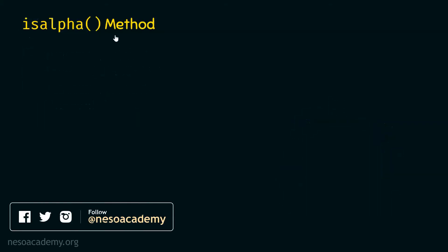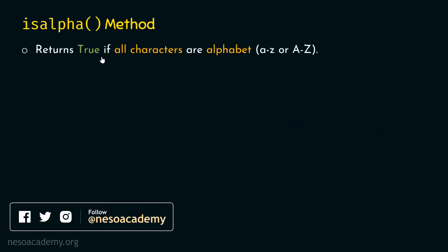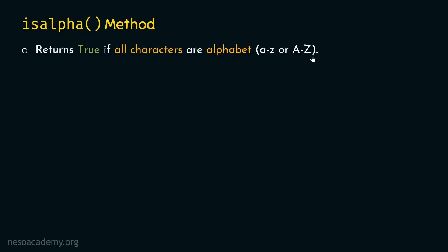What is the isalpha method? The isalpha method returns true if all characters are alphabet — meaning all characters must lie in the range from a to z (small a to small z) or capital A to capital Z. The syntax is: string dot isalpha with parentheses after it.